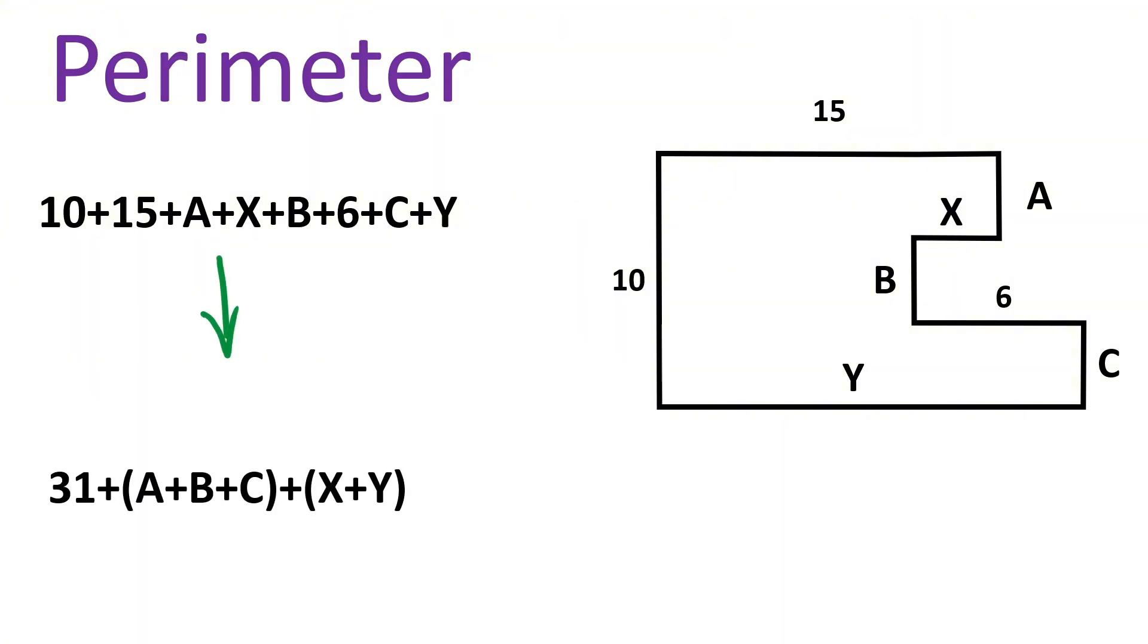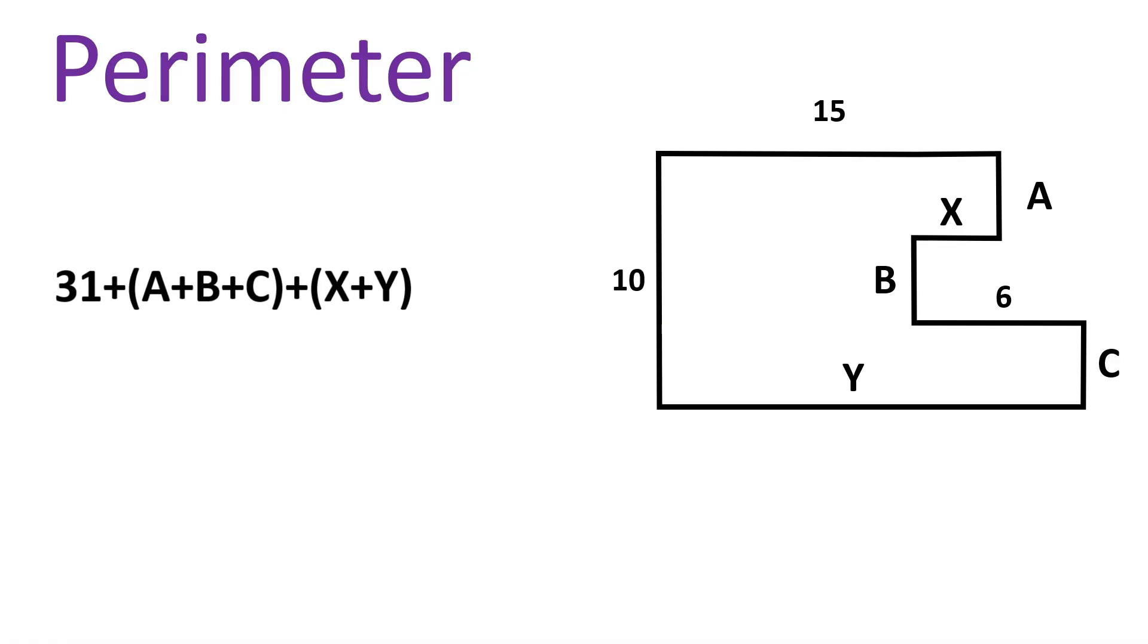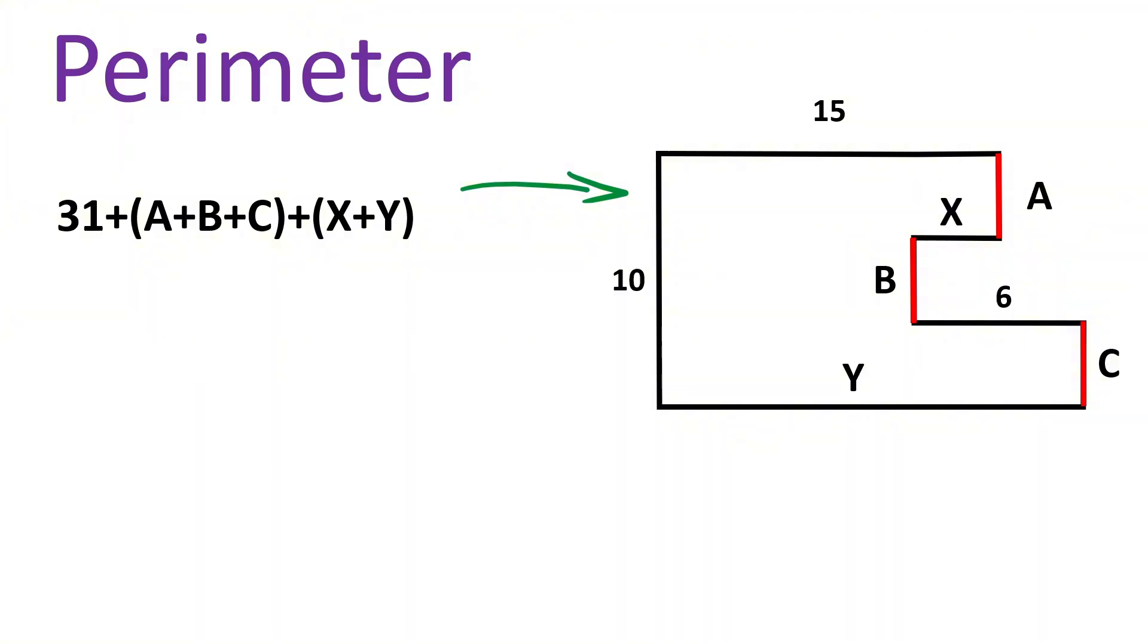This will be equal to 31 plus the rest. So put this part inside the bracket, so we have A plus B plus C, and then we have X plus Y inside another bracket.